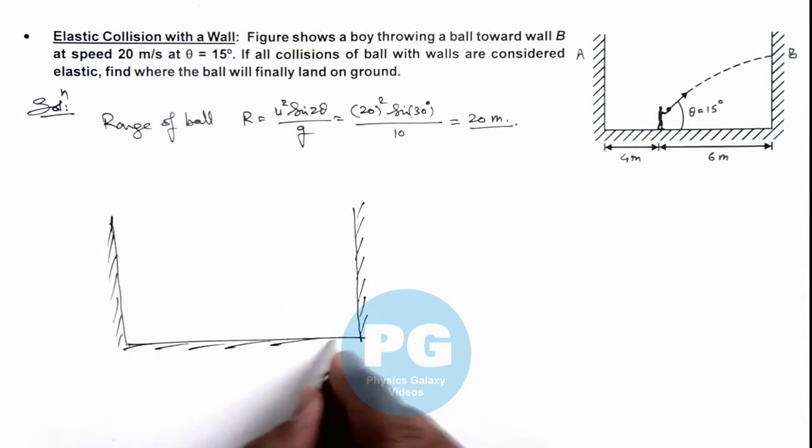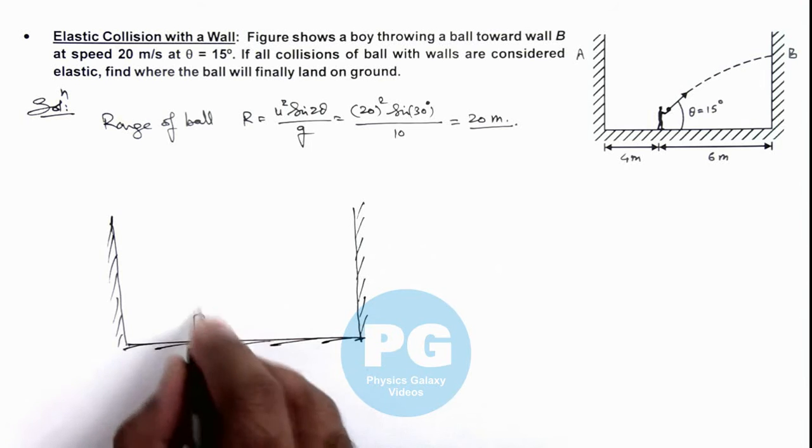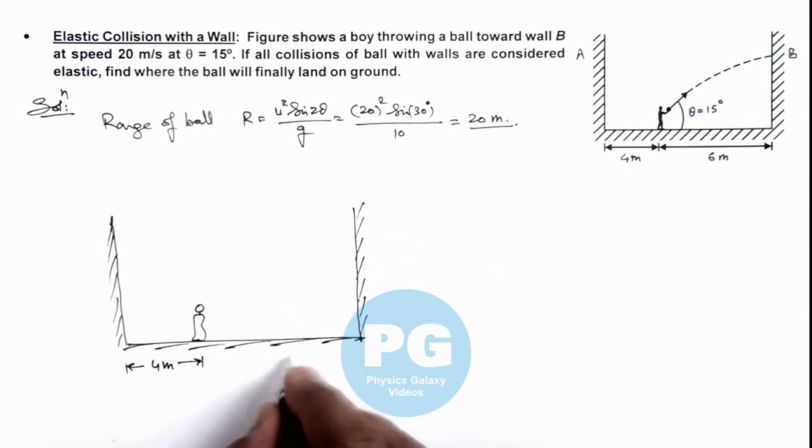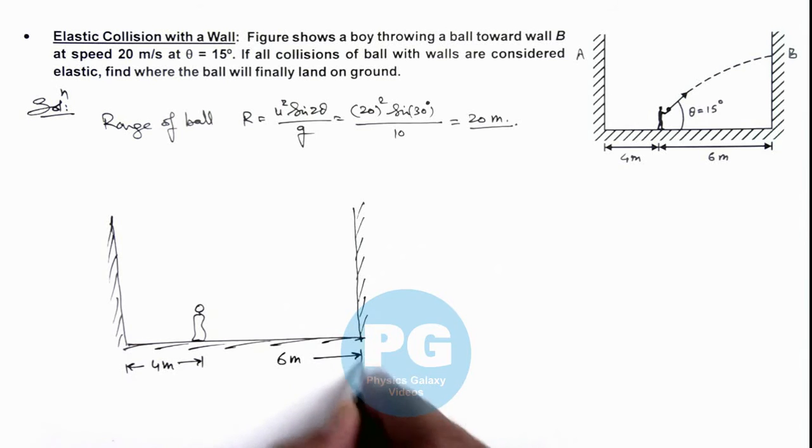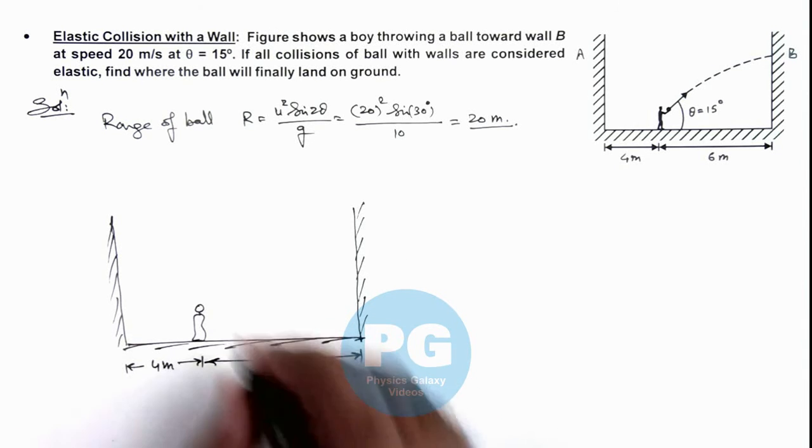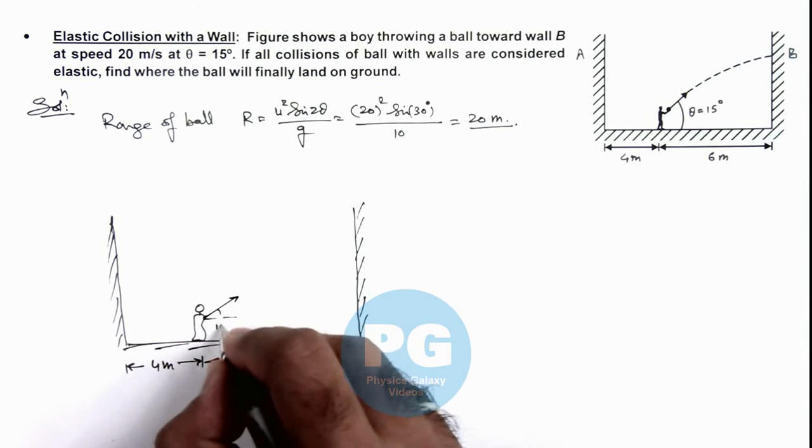Here, this is the boy located at a distance 4 meters from one wall and at a distance of 6 meters from another wall. The separation between walls is 10 meters. If he throws the ball at an angle 15 degrees...